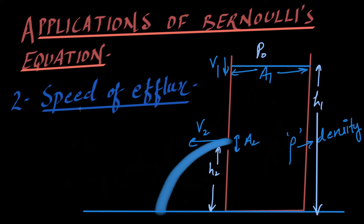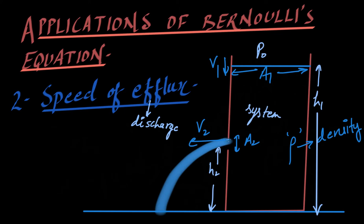This is called the speed of efflux — efflux simply means discharge. To proceed, I will assume that the liquid inside this container is my system, and I want to apply Bernoulli's theorem. I will choose two surfaces: surface number one, which is the upper surface, and surface number two, which is the hole. I want to apply Bernoulli's theorem between these two points.